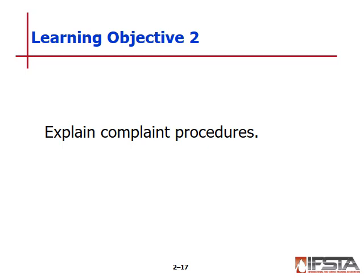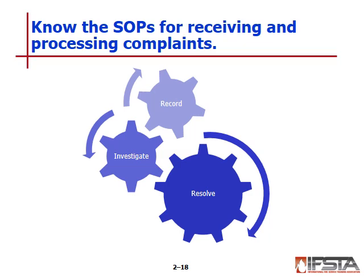Complaint Procedures — Pages 51–52, Objective 2: Explain complaint procedures. Inspection SOPs should outline a procedure for receiving and processing complaints. Inspectors should process and act upon each complaint consistently and record all pertinent information. Complaints not requiring immediate attention can be routinely assigned to inspection staff. Complaints involving a serious life safety threat require immediate action and rapid correction. The type of occupancy, location, and severity determines whether an inspector needs to give advance notice or obtain an administrative warrant to enter. Voluntary compliance is always a goal, but issuing a citation sends a strong message to the community.